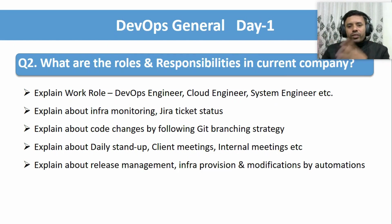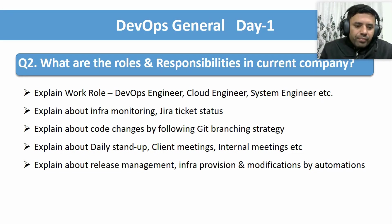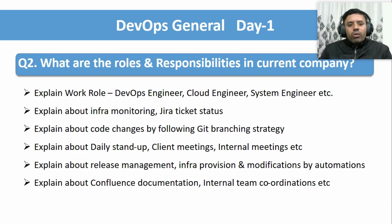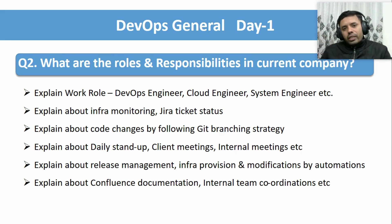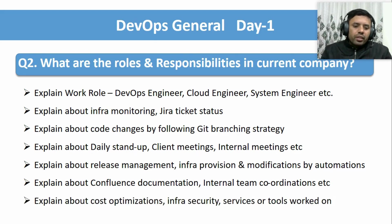You can also explain any release management processes you follow, including Confluence documentation and the release process. For infrastructure provisioning, mention any automation tools you use like Terraform, CDK, or CloudFormation. Talk about maintaining Confluence documentation as a standard best practice for managing infrastructure or any release management process, so the team has a reference. Also mention internal team coordination — understanding requirements or discussing any issues — and any cost optimization, infrastructure security, or tools you have worked on.